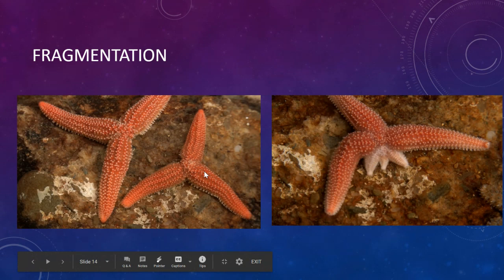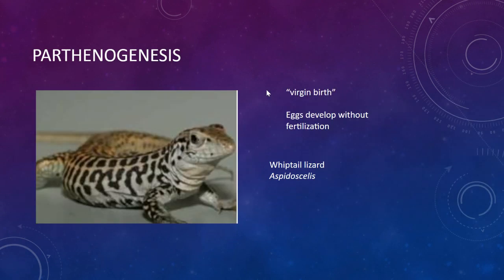Starfish reproduce by fragmentation. If you split them, they'll grow new starfish legs — a pretty neat way to asexually reproduce.